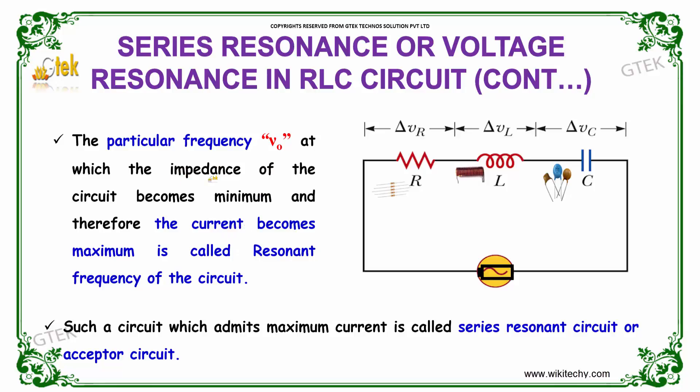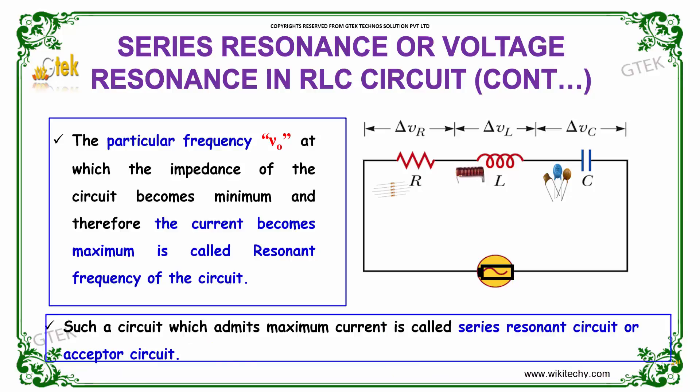The particular frequency nu naught at which the impedance of the circuit becomes minimum and therefore the current becomes maximum is called resonant frequency of the circuit. Such a circuit is called series resonant circuit or acceptor circuit.